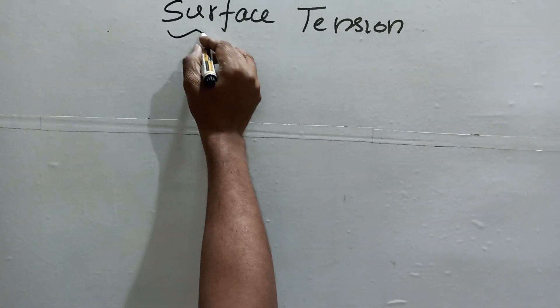Hi friends, welcome to my channel. In the last video I explained how to obtain the dimensional formula of a physical quantity. Now I will take one more physical quantity to derive the dimensional formula — that is surface tension. Surface tension is nothing but the force per unit length.